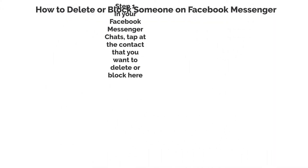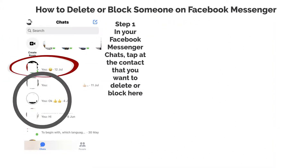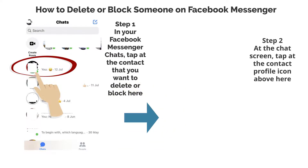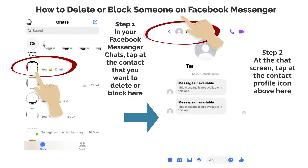Step 1. In your Facebook Messenger chats, tap the contact that you want to delete or block. Step 2. At the chat screen, tap the contact profile icon above.